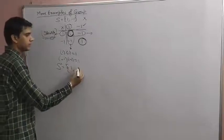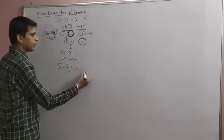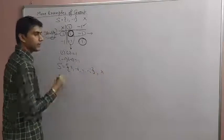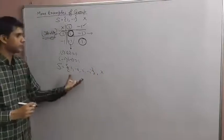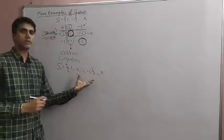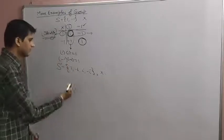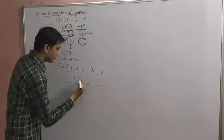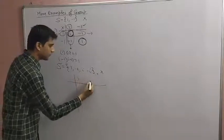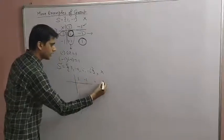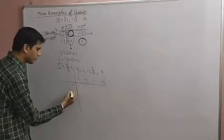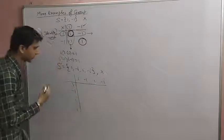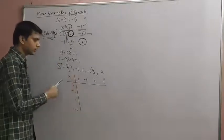Next, we take a set S' containing the elements 1, -1, i, and -i. Again we define multiplication on it, and we check whether this set forms a group by constructing a composition table.